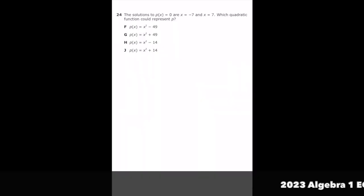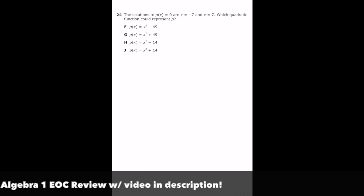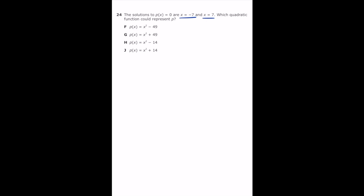This is number 24 from the 2022 Algebra 1 EOC. The solutions to P of X equals 0 are X equals negative 7 and X equals 7. Which quadratic function could represent P? So if the solutions to our function are X equals negative 7 and X equals 7, I know we're dealing with a difference of squares. So all we need to do is write out our function: X plus 7 and X minus 7. And we're just going to go ahead and use FOIL or multiply both of those together to get our answer.